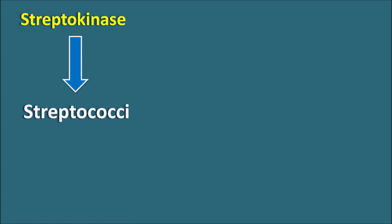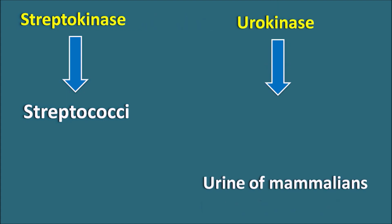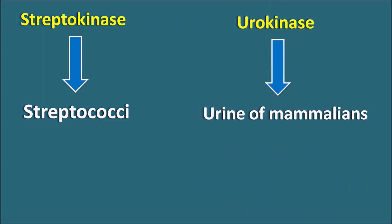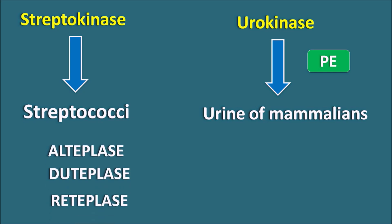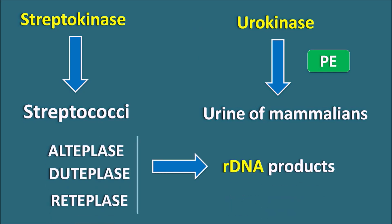Streptokinase is one tissue plasminogen activator extracted from streptococci and can be used in various types of clotting disorders. Urokinase can be extracted from human urine as well as from plasma, and is particularly used for pulmonary embolism. Other drugs like alteplase, uteplase, and reteplase are all recombinant DNA products which have somewhat fewer allergic reactions compared with streptokinase and urokinase.